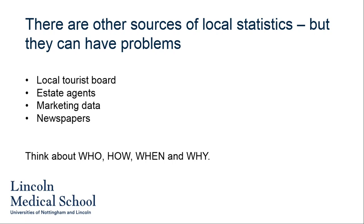There are other sources of local statistics you might find when looking up health statistics for an area, but there can be problems. Sometimes health statistics are put together by people who have an interest in making an area look really good — a local tourist board wants you to visit, or local estate agents want you to buy a house there, so they put together statistics that make an area look very positive. On the other hand, a local newspaper might want dramatic information, putting together statistics about rising crime because that looks more dramatic in a headline. So while other sources can be useful, particularly for things not covered in official statistics, there can also be weaknesses.